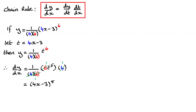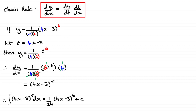So this is saying that if I integrate (4x minus 3) to the power 5, I get (1 over 24) times (4x minus 3) to the power 6. That matches what we did before on the previous page — I added 1 to the power 5 to get 6, then divided by 6 times 4, which is 24. So you can see it works.